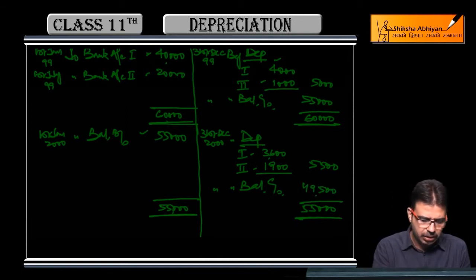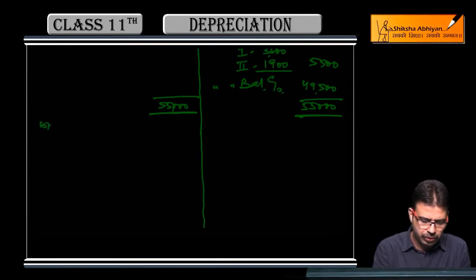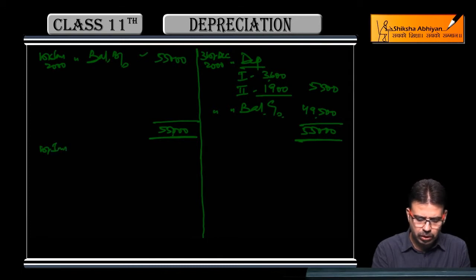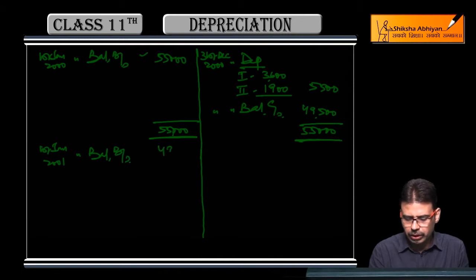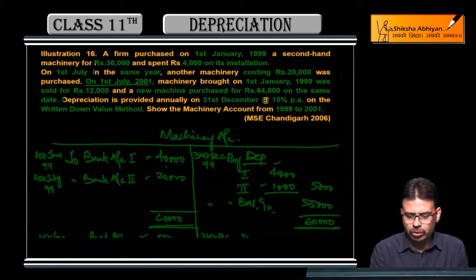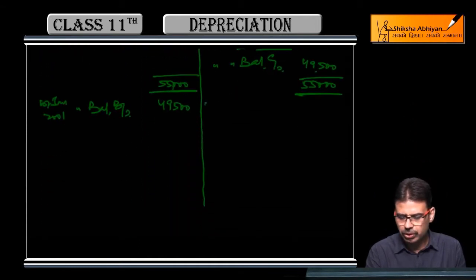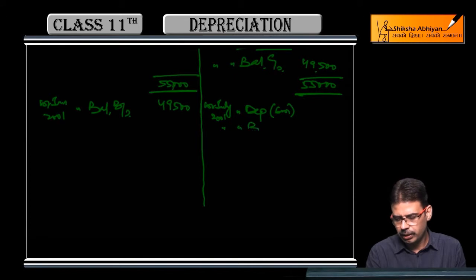Whatever it is, it's in front of you, and 49,500 is ahead. Now third year: first of January 2001, third year and last year, to balance brought down 49,500. And you see what's said in the question: first July 2001, first machinery sold for 12,000 and new machinery for 64,000.